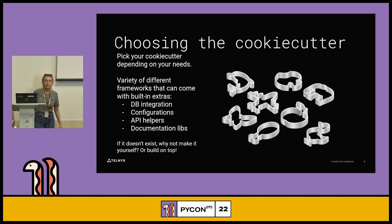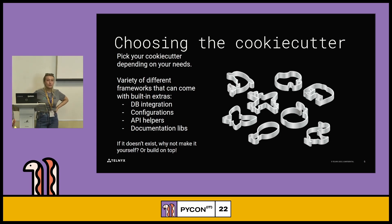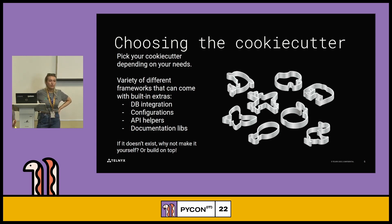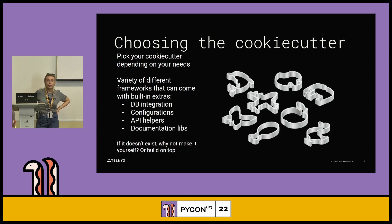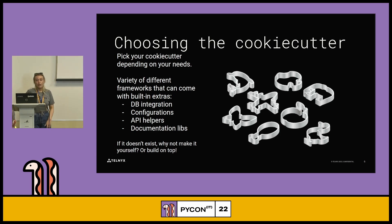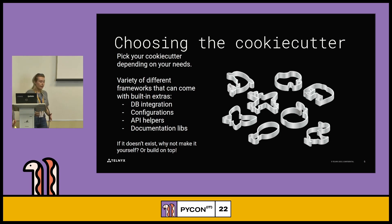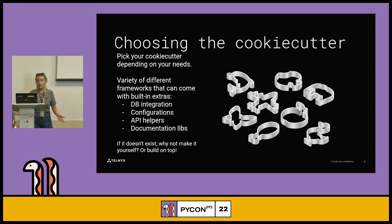When choosing your cookie cutter, how do you know which one to choose? There's a variety of different frameworks and built-in extras. DB integration — maybe you want SQLAlchemy on top of your running service. Configurations — maybe you want a config file or a meta file. API helpers — something like Swagger can actually be embedded in the cookie cutter before you do anything to it. And documentation libraries as well. You can also build on top of pre-existing cookie cutter templates from GitHub.